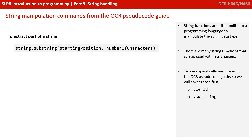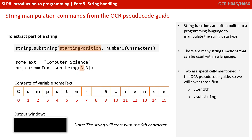The second string manipulation command specifically mentioned in the OCR pseudocode guide is dot substring. Dot substring takes a couple of parameters: starting position and number of characters. So 'some_text.substring' — some_text is the string 'computer science'. We supply it the starting position; this is not the third character along, but the character at position three, which is actually the fourth character. The second parameter is the number of characters to extract starting from that position. So we've moved to index position three, which is 'P', and extract three characters: P, U, T. Therefore 'some_text.substring(3, 3)' returns 'put'.